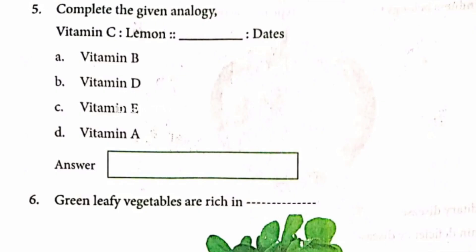Question number 5. Complete the given analogy: Vitamin C is to lemon, as which vitamin is to dates? The answer is D. Vitamin A.